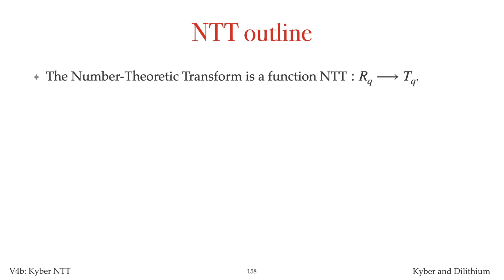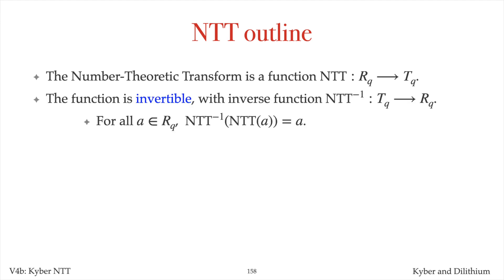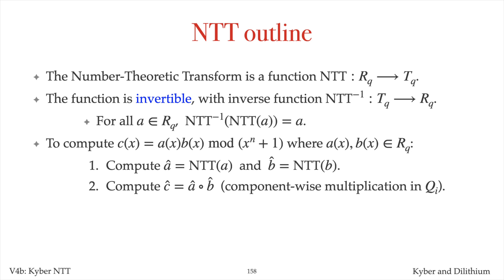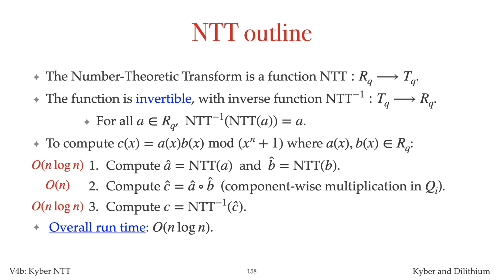The Kyber NTT is a function from the polynomial ring Rq to the set Tq, which will be defined later. The NTT is invertible. To multiply polynomials a and b in Rq, one first computes â, the NTT of a, and b̂, the NTT of b. Then one computes the NTT ĉ of the product of â and b̂. This multiplication is component-wise in qi, which will be defined later. Finally, compute the NTT inverse of ĉ to get the desired product c. The overall time is O(n log n).